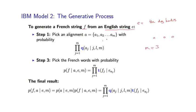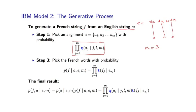In the first step, we choose an alignment from the set of possible alignments with this probability. For each word in the French sentence, we choose an alignment to some English word. This is dictated by the alignment parameters — these Q parameters.